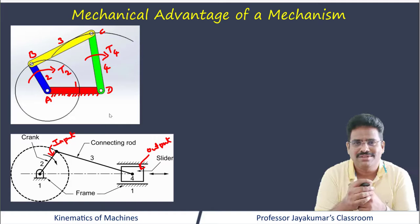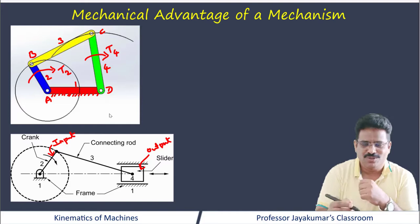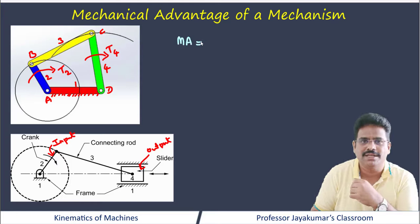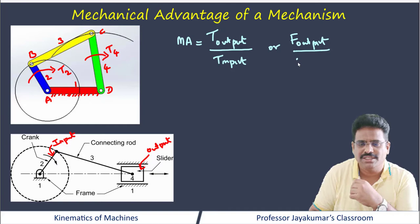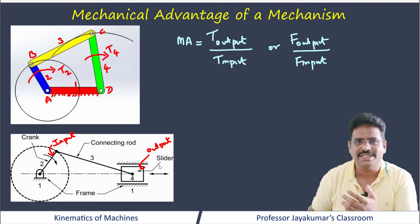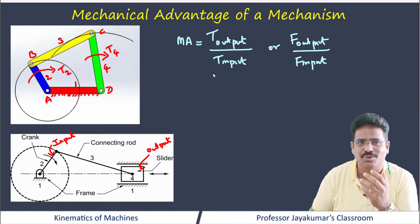A mechanism needs to transmit and transform force or torque that is supplied to the input link effectively to the output link. Mechanical advantage equals output torque over input torque, or equivalently, output force divided by input force. If a link rotates or oscillates, we are transmitting torque. In some cases, the link will have translatory motion as in the case of a slider — then we are transmitting force. Depending on whether your link is translating, rotating, or oscillating, we use the terms torques and forces accordingly.